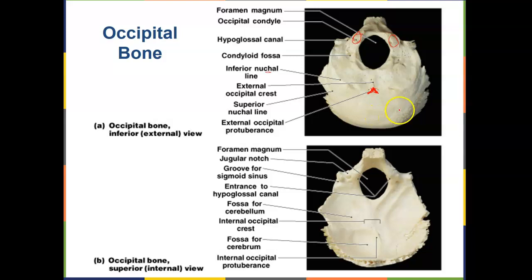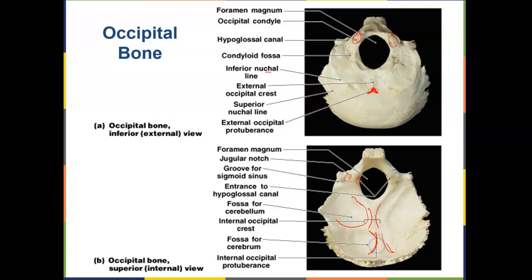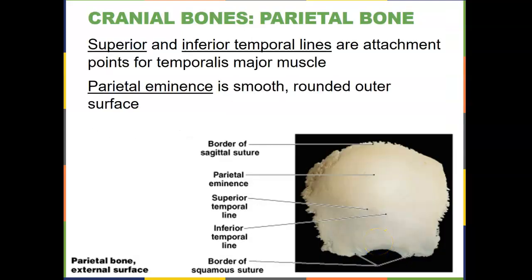Internally, the foramen magnum is in the same place. Here's the jugular notch — a large hole. The groove for the sigmoid sinus and the entrance to the hypoglossal canal are visible. The fossa for the cerebellum is a depression — not a hole. The internal occipital crest separates the two hemispheres of the brain. The fossa for the cerebrum is here, and the internal occipital protuberance is also visible on the interior surface.